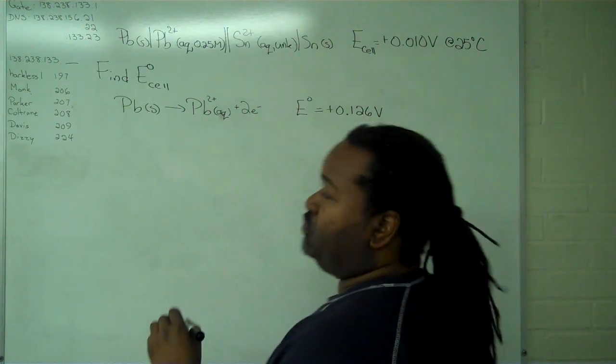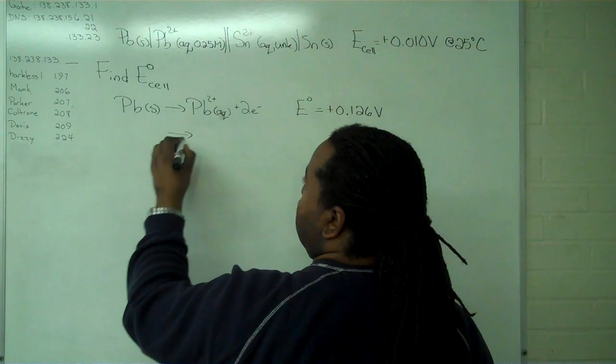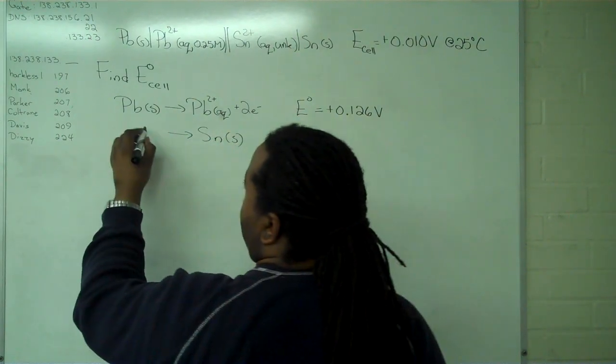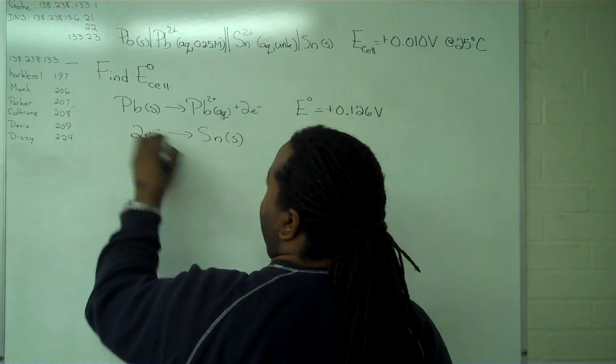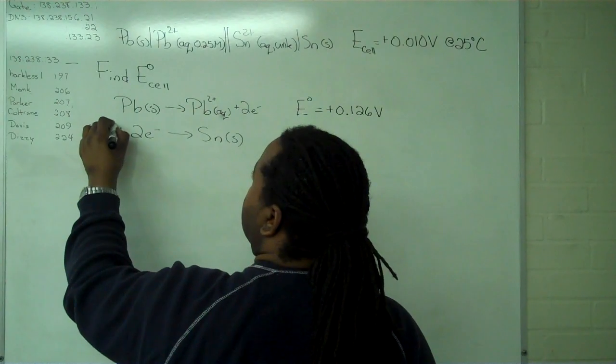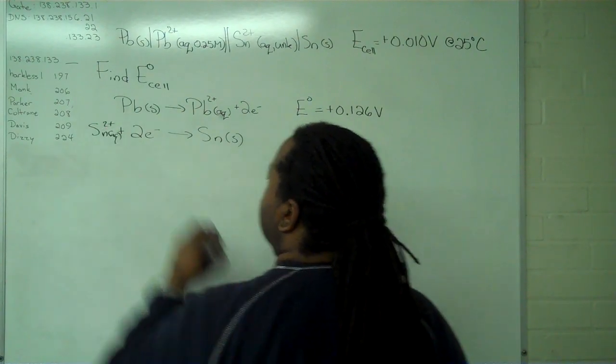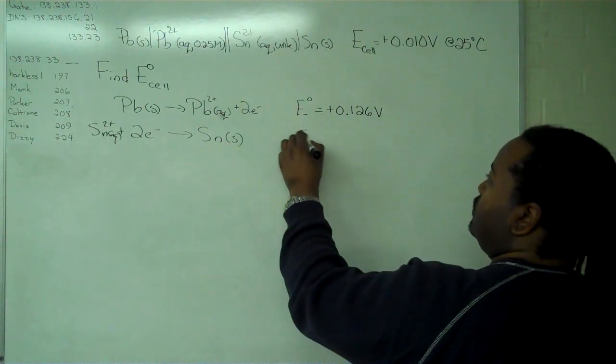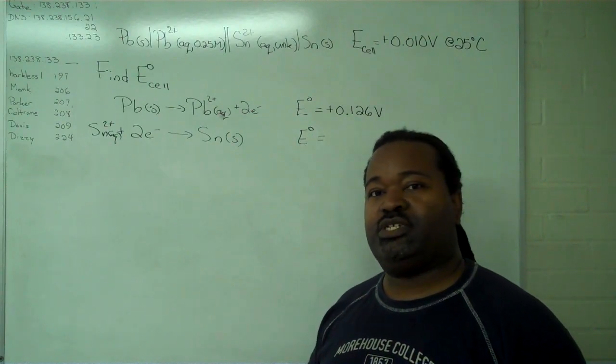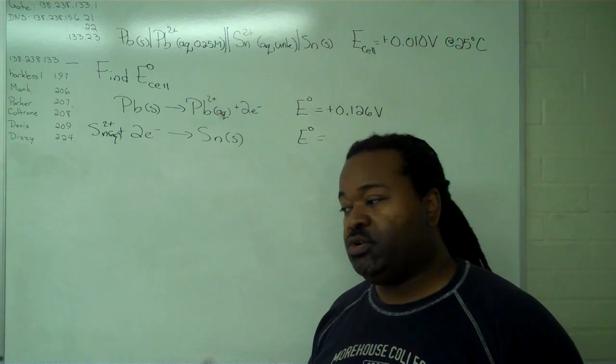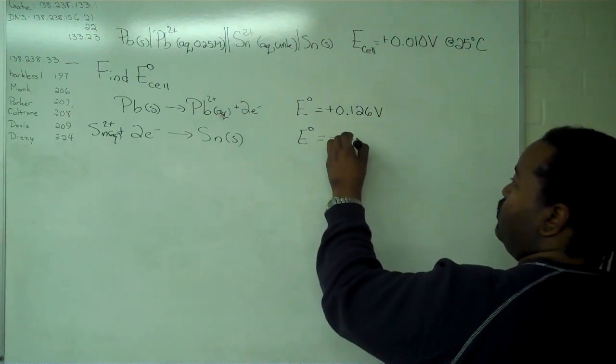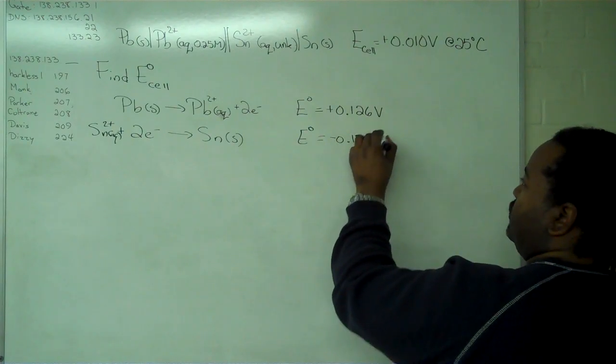This one is reduction as written, so we have solid tin as the product, and the only thing to add for reactants is two electrons. When we look this up in the standard cell potential table, it's reduction, so we keep the sign as is: minus 0.136 volts.